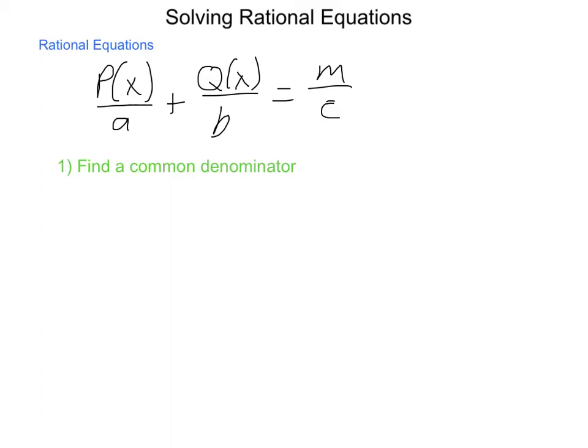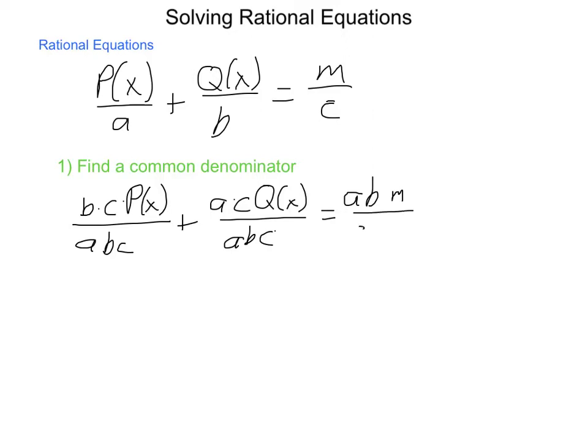Now once we have that common denominator happening, we're going to have something that looks more along the lines of bc·P(x)/abc + ac·Q(x)/abc equals abm/abc.